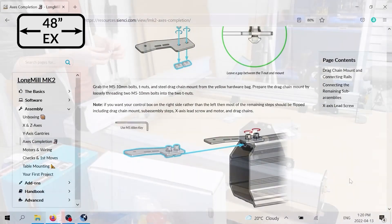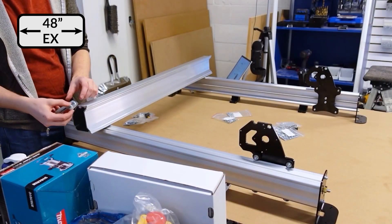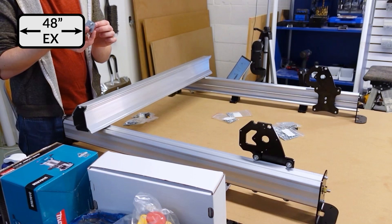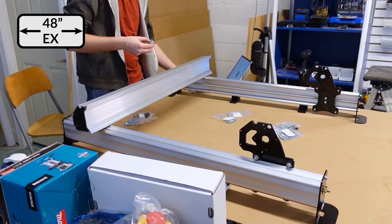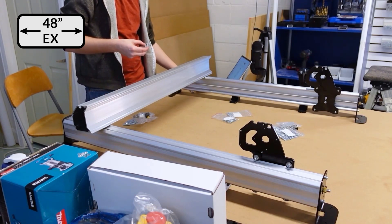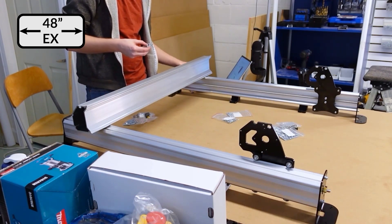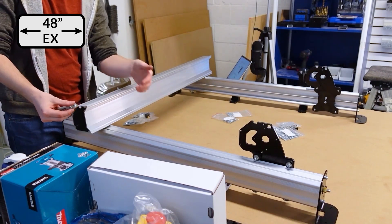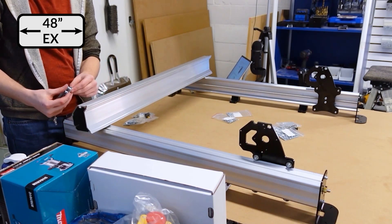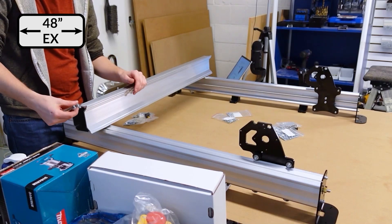And then you just slide this on. And the way that it'll slide on is you'll have to have the T-nut oriented properly so that it slides into the rail. This is very similar to the way that the middle feet slid onto the Y-rail, because this is actually the same profile that we're using.